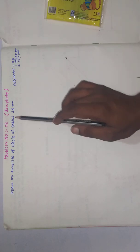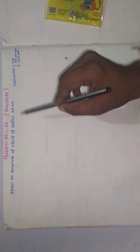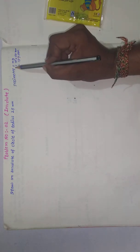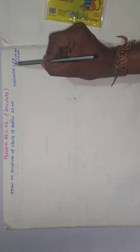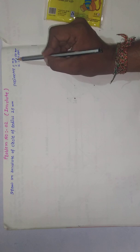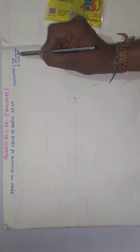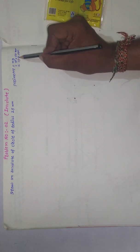Problem number two is to draw an involute of a circle having a radius of 25 mm. Radius is 25 mm, which means diameter is 50 mm. The perimeter is equal to pi into d, where d is 50 mm.